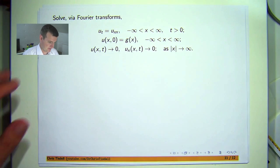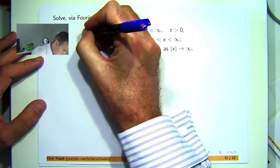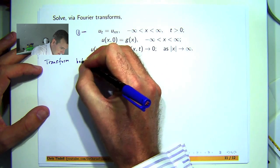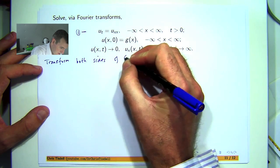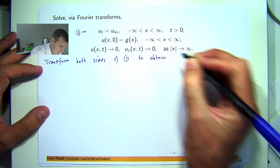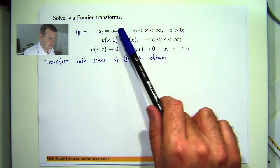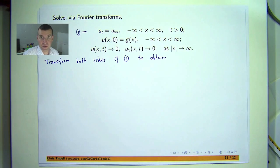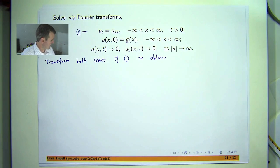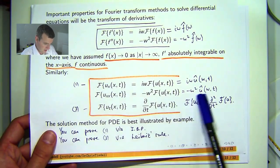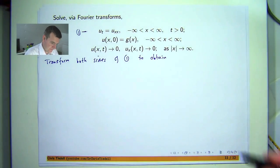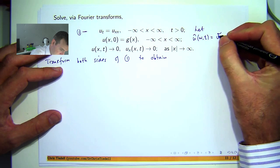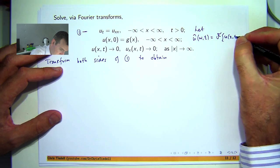So let's call this equation 1. So we transform both sides of 1 to obtain the following. Now remember, when we take the Fourier transforms, we're essentially transforming with respect to the spatial, or x, variable. Now for the t variable, this derivative will just be the derivative of the transform. And this one can be written down from this middle line here. So I'm going to let a little bit of notation. Let u of w, t be the Fourier transform of u with respect to the x variable.